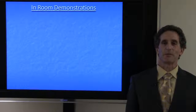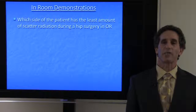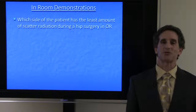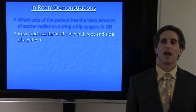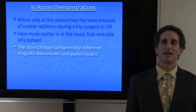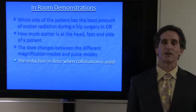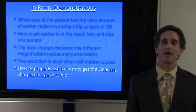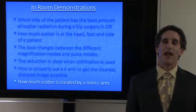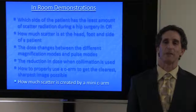Some of the in-room demonstrations include which side of the patient has the least amount of scatter radiation during a hip surgery in the OR, how much scatter is at the head, foot, and side of a patient, the dose changes between the different mag modes and pulse modes, the reduction in dose when collimation is used, how to properly use a C-arm to get the clearest and sharpest image possible, and how much scatter is created by a mini C-arm.